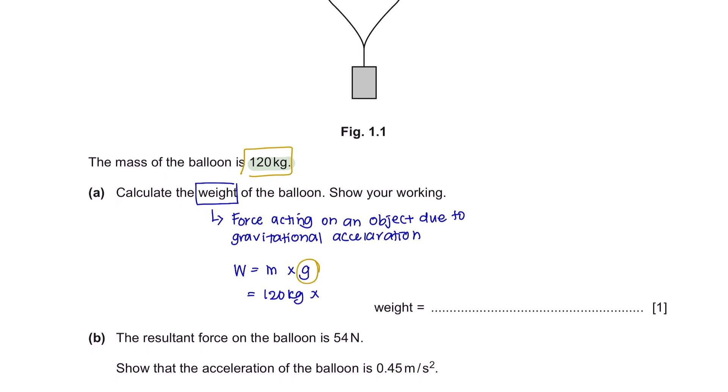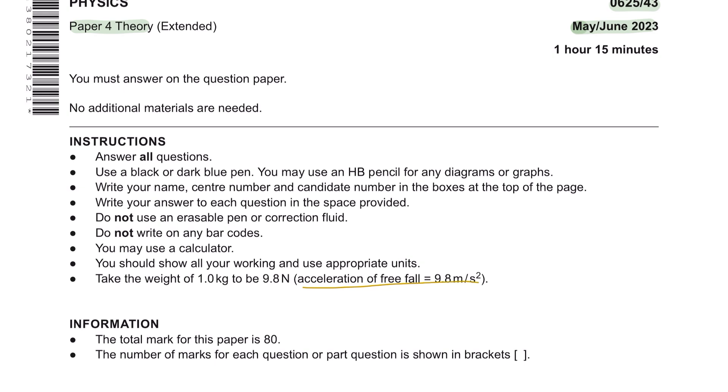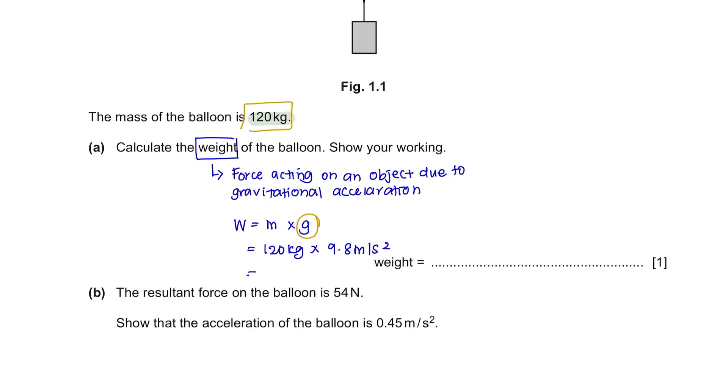The mass is already given here which is 120 kg. And as for the value of g, you can refer to the first page of the question where they will give you the acceleration of freefall, and you have to use 9.8 meters per second squared. You will get a value of 1176 which is approximately 1200, and do not forget your unit newton.